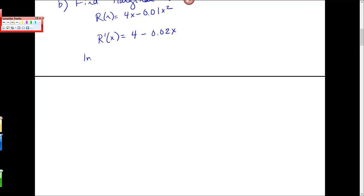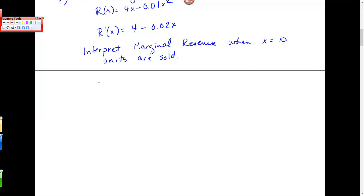Let's say I have a question that says interpret marginal revenue when x is equal to 10 units are sold. So when x is 10, I'm going to just find R'(10), which is 4 minus 0.02 times 10. This should be 3.8.